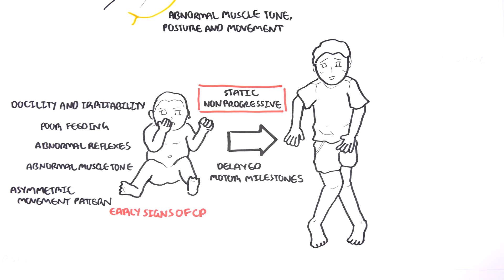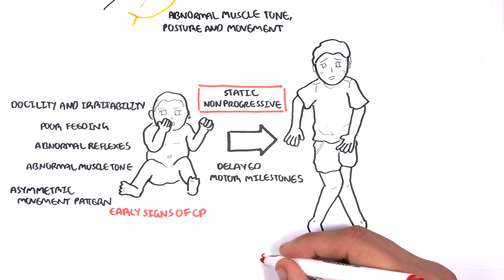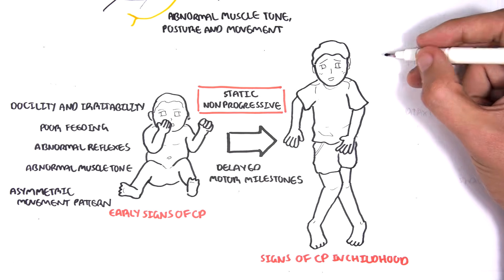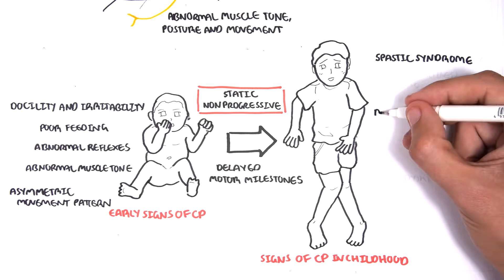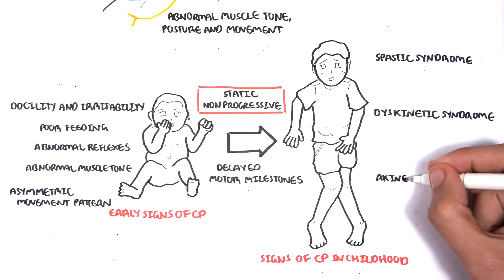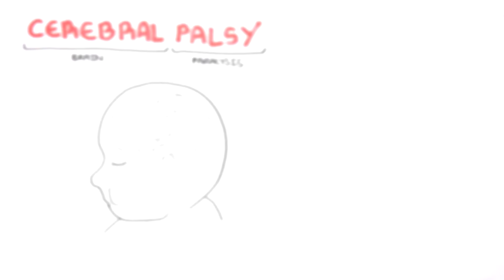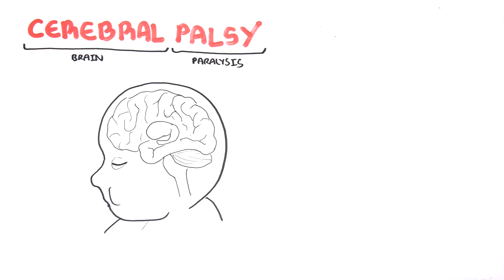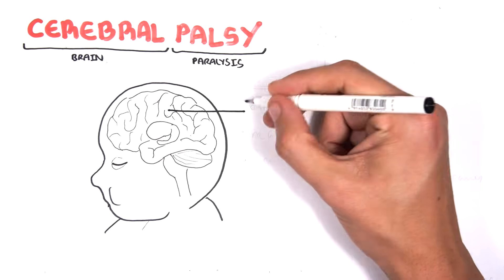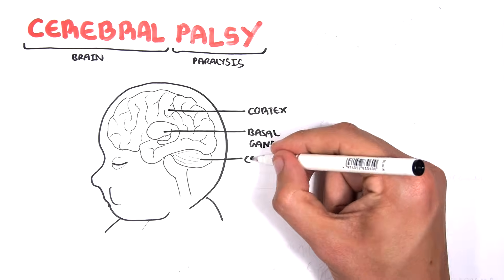Signs of cerebral palsy can be classified into three syndromes: spastic syndrome, dyskinetic syndrome, or ataxic syndrome. What's interesting is that these syndromes correlate to the brain areas we discussed — the cerebrum or cortex, the basal ganglia, and the cerebellum.